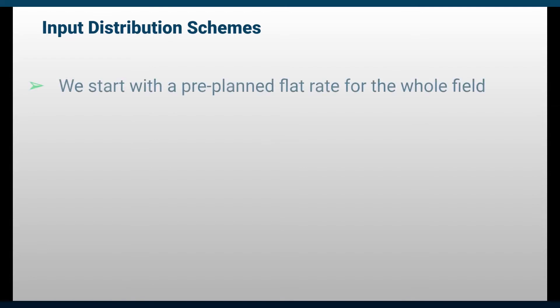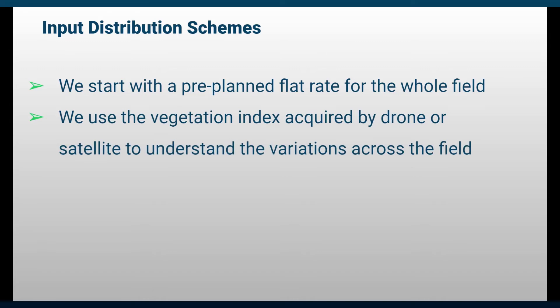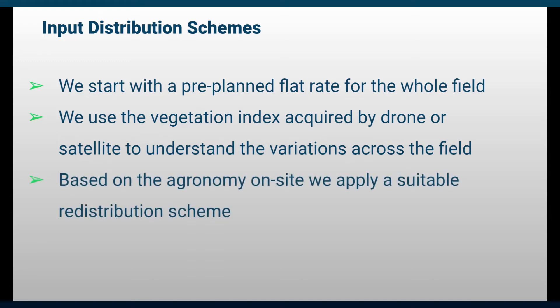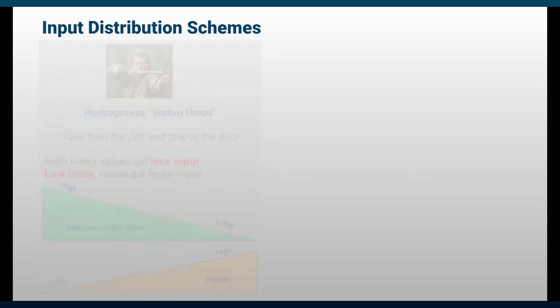Now that we understand vegetation indices, how can we use them to guide our application for nitrogen, crop growth regulators, or fungicides? We start with the planning of the application rate for the whole field based on agronomic and economic best practices. Then we generate a vegetation index to uncover the variability of our field. Based on the on-site conditions, we select a suitable redistribution scheme for the whole field application rate.